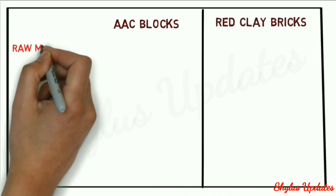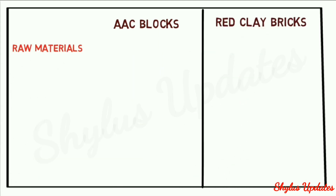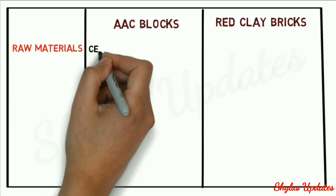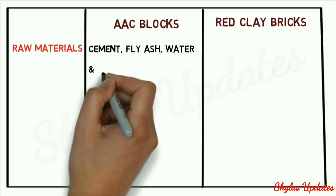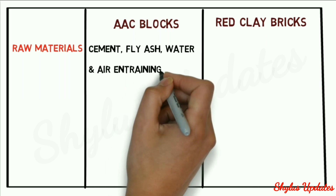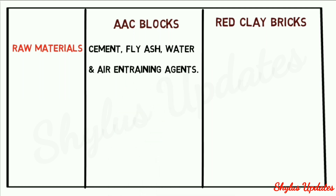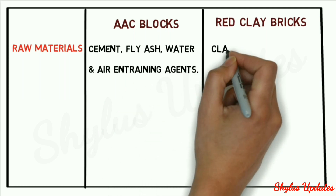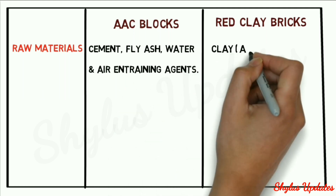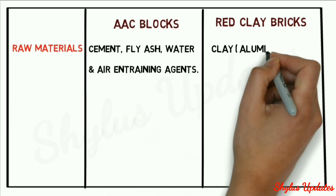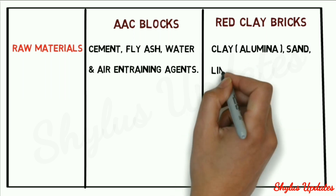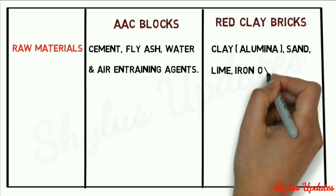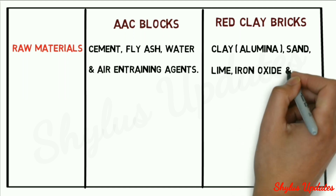The raw materials of AAC blocks are cement, fly ash, water, and air entraining agents. Raw materials of red clay bricks are clay, alumina, sand, lime, iron oxide, and magnesia.